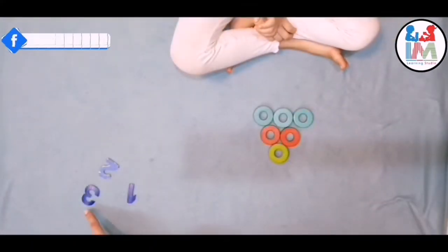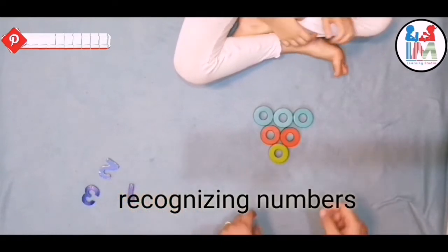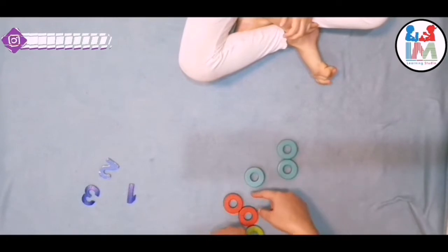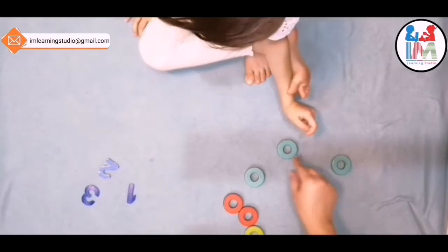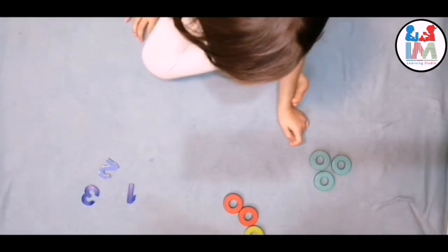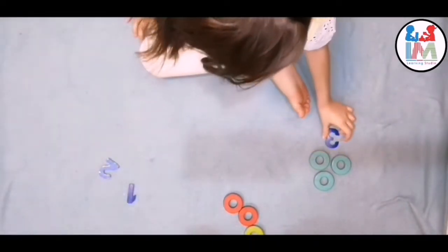Step number two is about recognizing numbers. Two. Okay, let's count these blue rings. Count? One, three. One, two, three. Three. Can you take number three and place here down? Yes, yes, good.